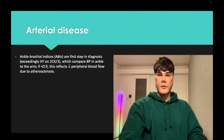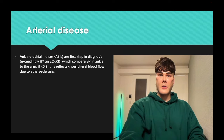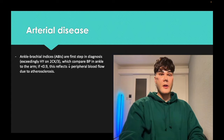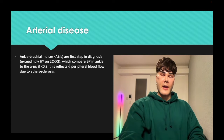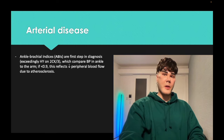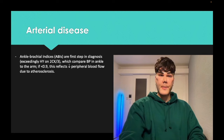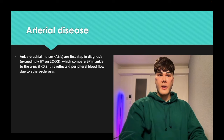Highest yield point for arterial disease for USMLE. ABI — ankle brachial indices — you're comparing the blood pressure in the leg to the blood pressure in the arm. If the ratio is under 0.9, that is our first initial diagnostic step for peripheral vascular disease. It means we have atherosclerosis in the vessels of the legs, which is why we have a diminution of blood pressure in the leg compared to the arm. So if it's under 0.9, we're going to continue with our diagnosis.